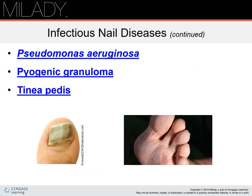Paronychia is a bacterial inflammation of the tissues surrounding the nail plate. Now we're going to talk about infectious nail diseases. First, we have Pseudomonas aeruginosa, a common bacteria that can lead to a bacterial infection appearing as green, yellow, or black discoloration on the nail bed. Pyogenic granuloma is a severe inflammation of the nail in which a lump of red tissue grows up from the nail bed to the nail plate. Tinea pedis, also known as athlete's foot, is a red, itchy rash on the skin on the bottom of the feet and/or between the toes, usually between the fourth and fifth toes.